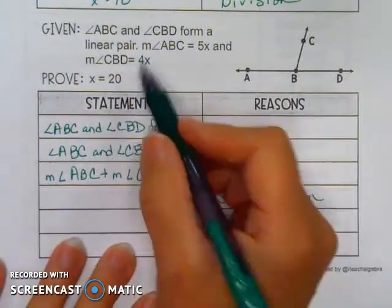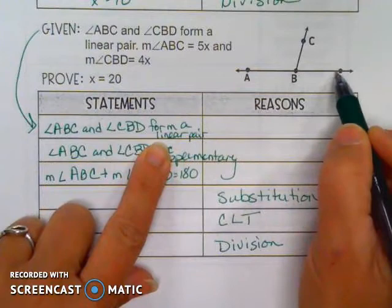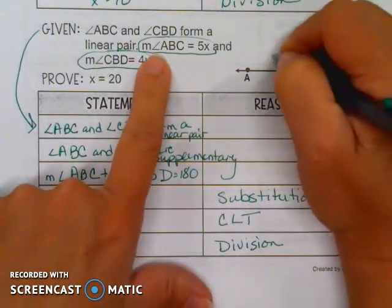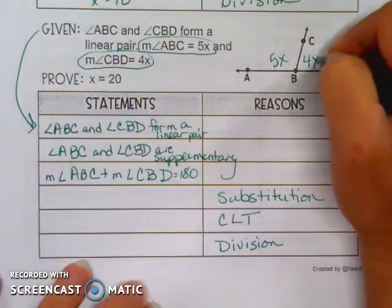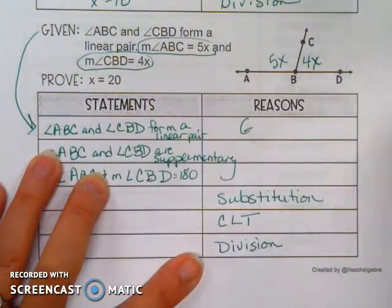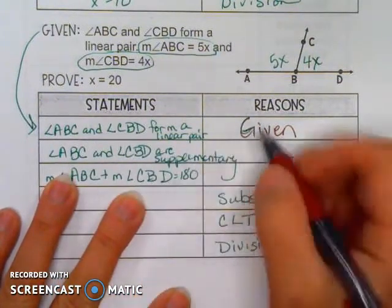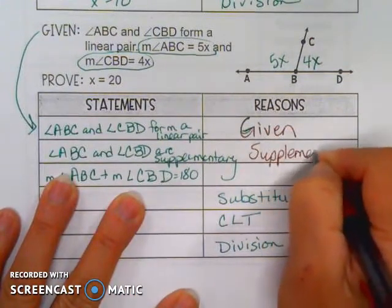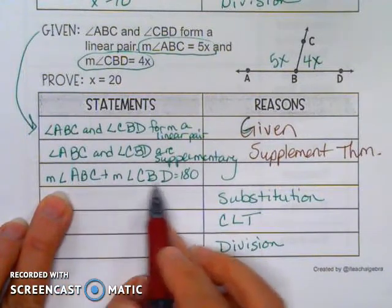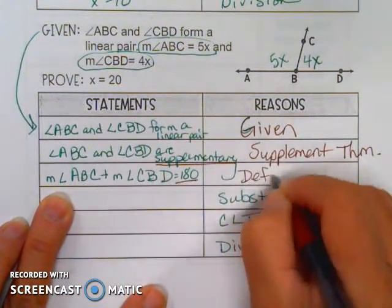We are starting with what they gave us: angle ABC and angle CBD form a linear pair — you can see that in the picture. It's a good idea to put specific information like angle ABC equals 5x and angle CBD equals 4x into the picture. Why can we say they form a linear pair? That information was given to us. If they form a linear pair, they are supplementary — that's from the Supplement Theorem.